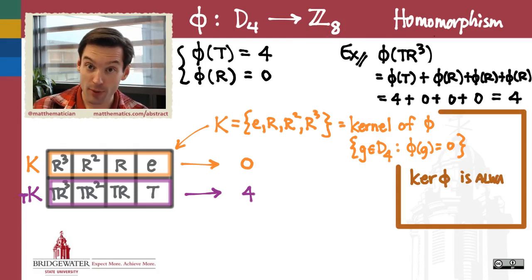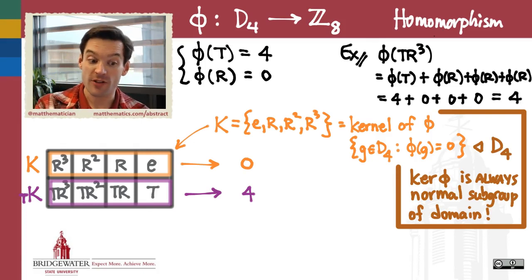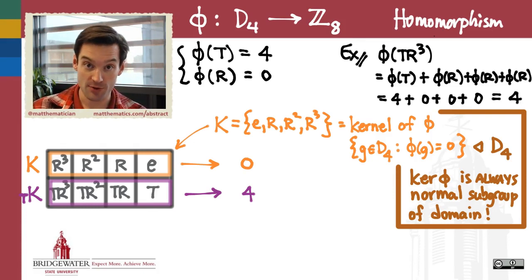And it turns out, and this is the most important general principle number one, that for any homomorphism out of a group, the kernel of that homomorphism is always a normal subgroup of that group. This is probably the most sophisticated way to find a normal subgroup out in the wild: you hand me a group, I try to make a homomorphism out of that group into any other group that I like, and the kernel of that homomorphism will always be a normal subgroup in my original group, the domain.